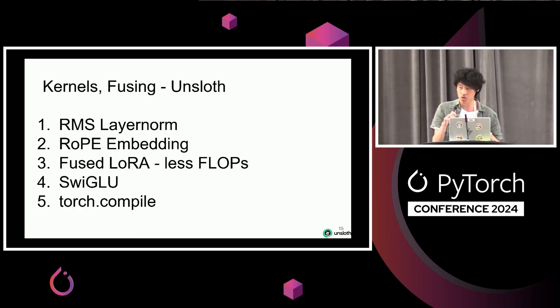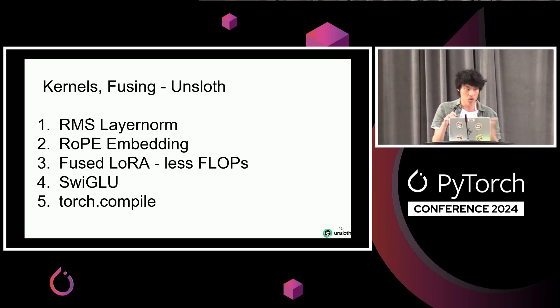For kernels, you should fuse all the kernels. In Unsloth, we do RMS layer norm fusing, RoPE embedding fusing, fused LoRA for fewer FLOPs, SwiGLU fusing, and Torch Compile — which is fantastic. We do a lot of this in Unsloth.